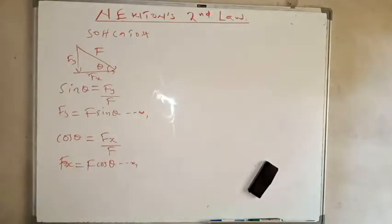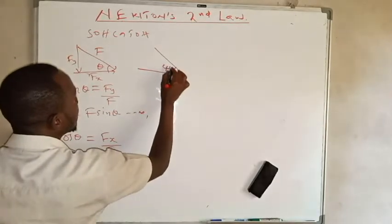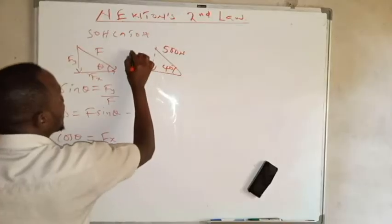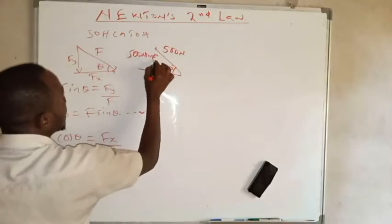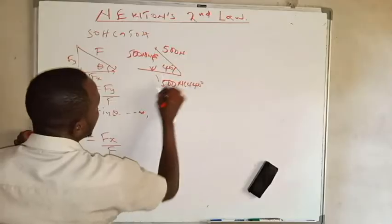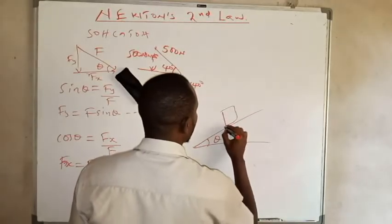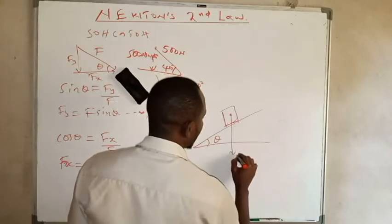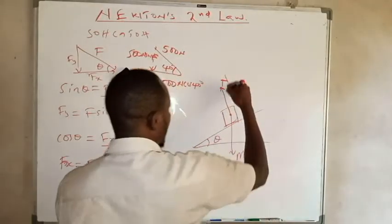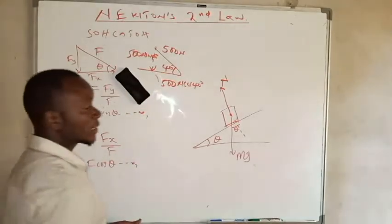Substituting the values, the y component becomes 500 newtons times sine 40 degrees, and the x component becomes 500 newtons times cosine 40 degrees. The block has its weight mg acting downward, and the normal force acts perpendicular to the inclined surface.